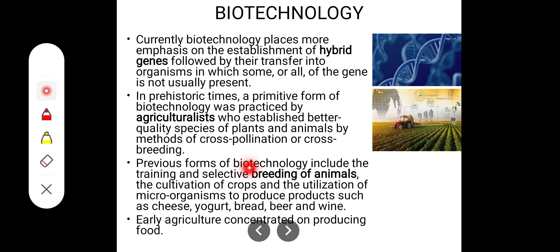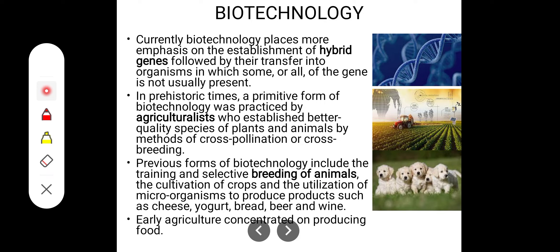Previous forms of biotechnology include the training and selective breeding of animals, the cultivation of crops, and the utilization of microorganisms to produce products such as cheese, yogurt, bread, beer, and wines.